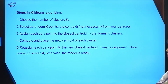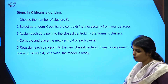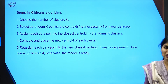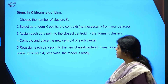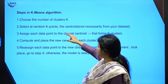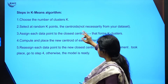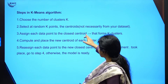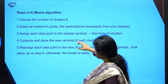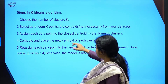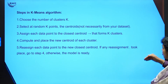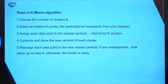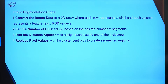These are the steps followed in the k-means algorithm. First, choose the number of clusters k — how many clusters to divide the data into. After that, select random k points as centroids, then assign each data point to the closest centroid, forming k clusters. Compute and place the new centroid of each cluster, and reassign data points to the newest centroid. If any reassignment took place, go back to step 4; otherwise the model is ready.